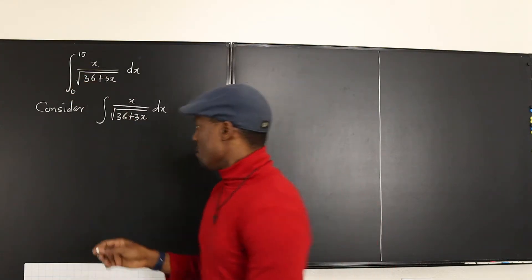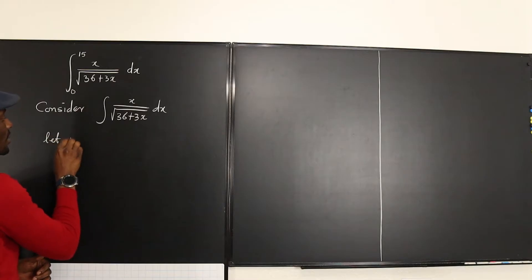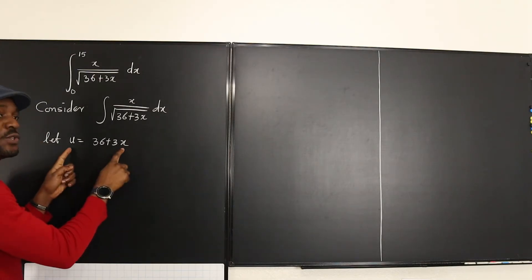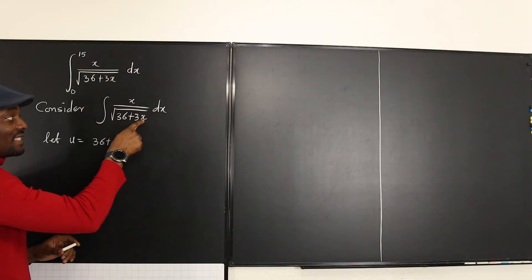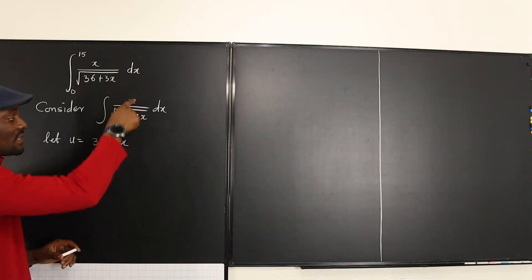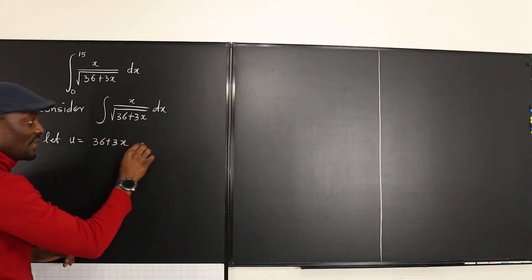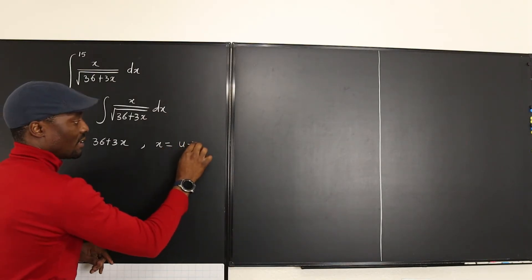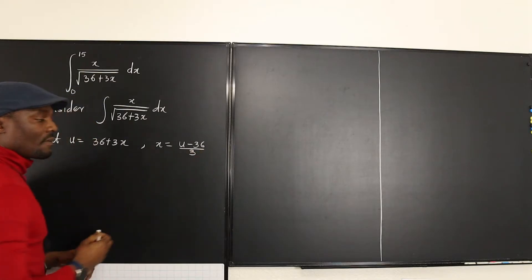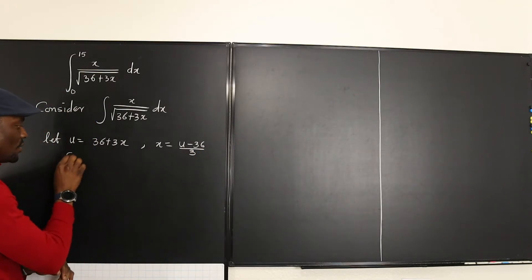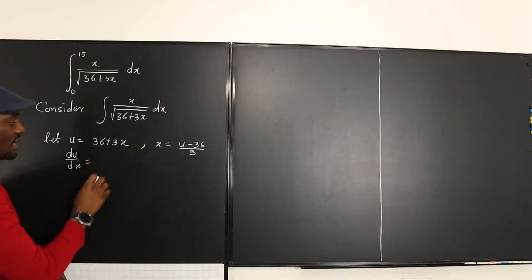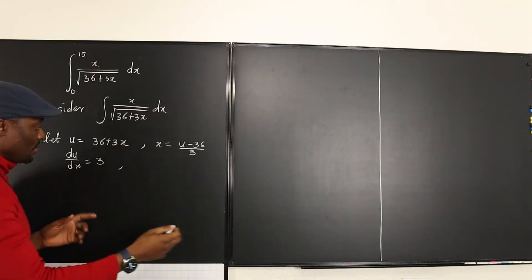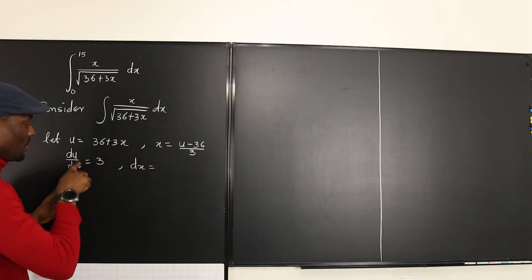Let u equal 36 plus 3x. Since x also appears separately in the numerator, we want to express x in terms of u, so x equals u minus 36 divided by 3. Next, du/dx equals 3, and because we need to replace dx, we get dx equals du over 3.